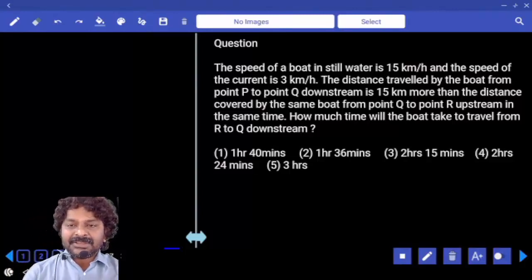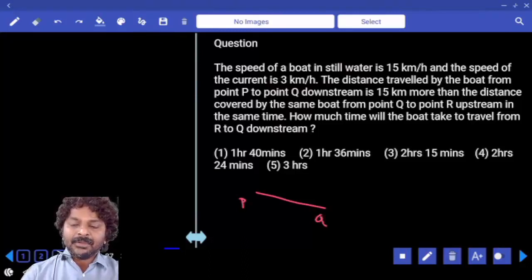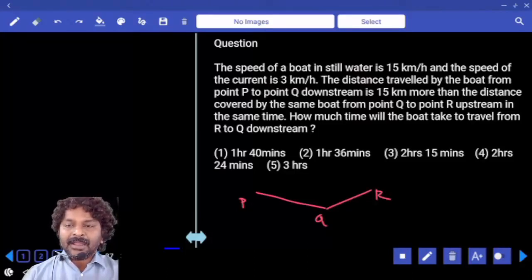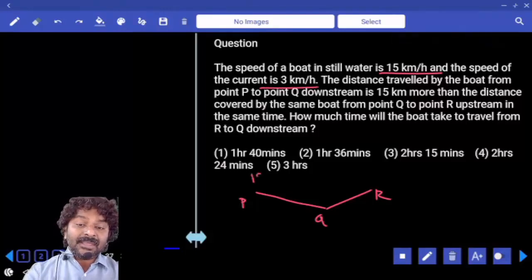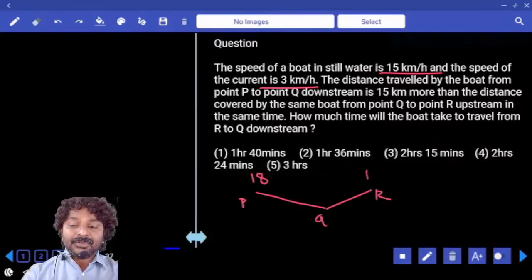Now it is clearly mentioned that P to Q is downstream, correct? Q to R is upstream and man speed is 15, stream speed is 3. Downstream? 18. Upstream? 12.